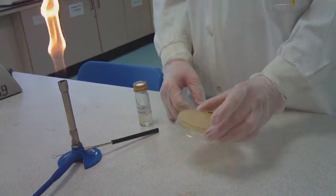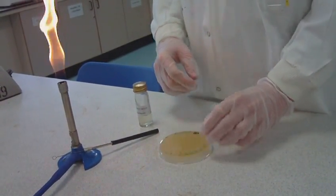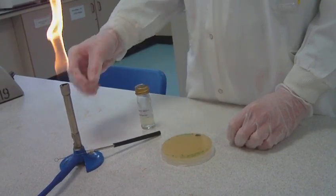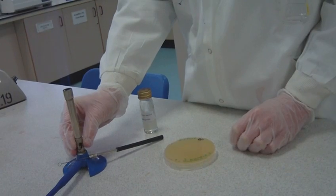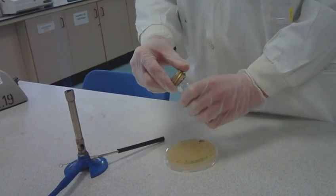Place the inverted plate close to the Bunsen burner to reduce chances of contamination. Turn on the Bunsen burner. Loosen the cap of the bottle containing the inoculum.